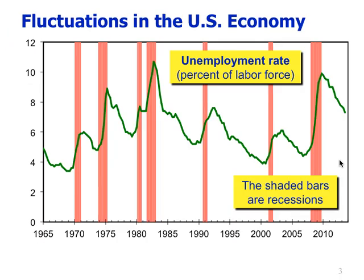Recall this diagram about fluctuations in the U.S. economy — in particular the unemployment rate. From 1965 to about 2015 you see the unemployment rate as a green line going up and down, with shaded bars being recessions. During recessions we have these big spikes in unemployment, which is obviously both a political and economic concern.